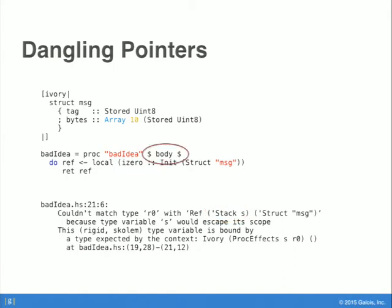The reason for that error is that we're using the 'body' combinator. What 'body' means is: when defining a procedure, I've reached the point where I'm going to define the code of the procedure — I've specified all my formal parameters and pre/post conditions, and now I'm just going to specify code. That 'body' combinator also introduces locally a type variable that represents the current region. And because that type variable is quantified in a rank-2 context, should it escape on the return type of the function, you end up with a type error.